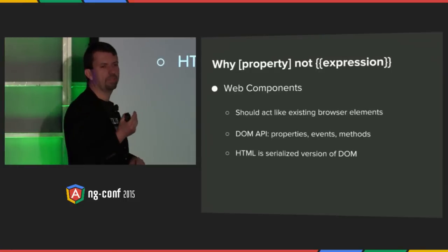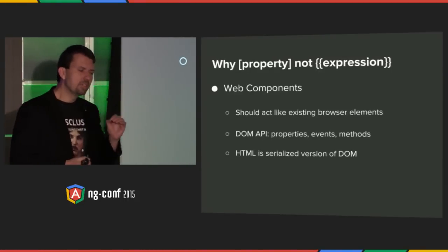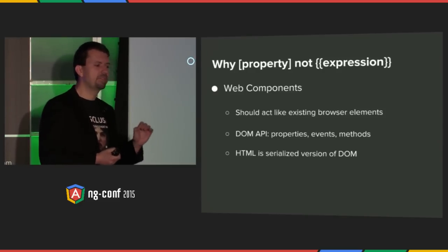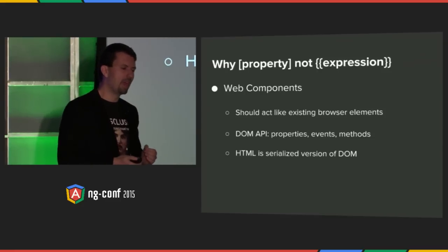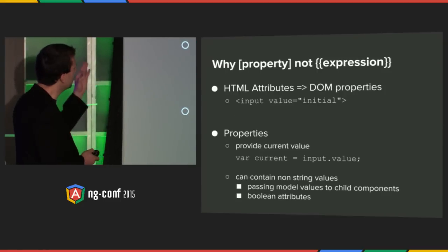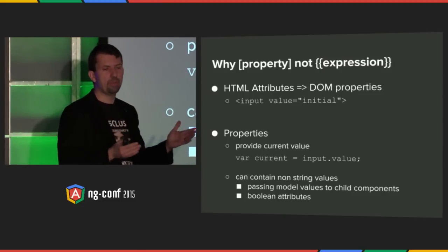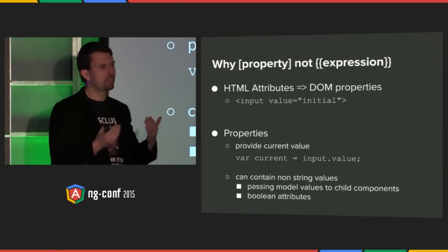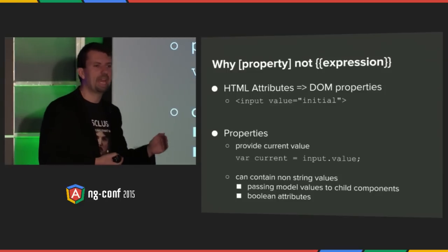Web components are an important part of Angular 2. We'd really like to just have them and use them out of the box. Web components should act like the browser's existing elements — you shouldn't be able to tell or behave differently from native elements. Elements in general have properties, events, and methods. That is the API surface of DOM elements, and it's the API surface that web components will have as well. HTML is a serialized version of the DOM — it's how we serialize DOM. But what we care about is the actual DOM, and the DOM's API is not the HTML serialization.